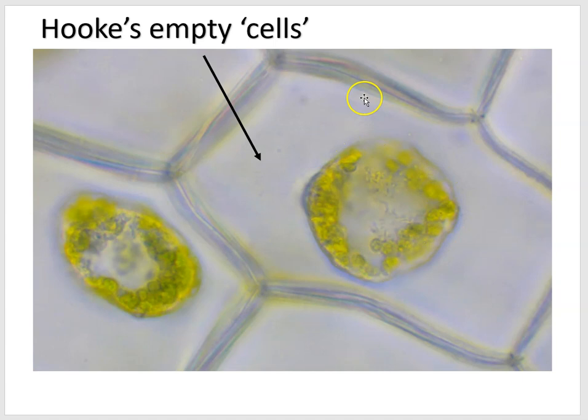Incidentally, remember that Hooke put cork tissue under the microscope and found those empty chambers. He was looking at the cell walls of plant cells, but all the fluid and cellular contents had disappeared — they were dead cells.